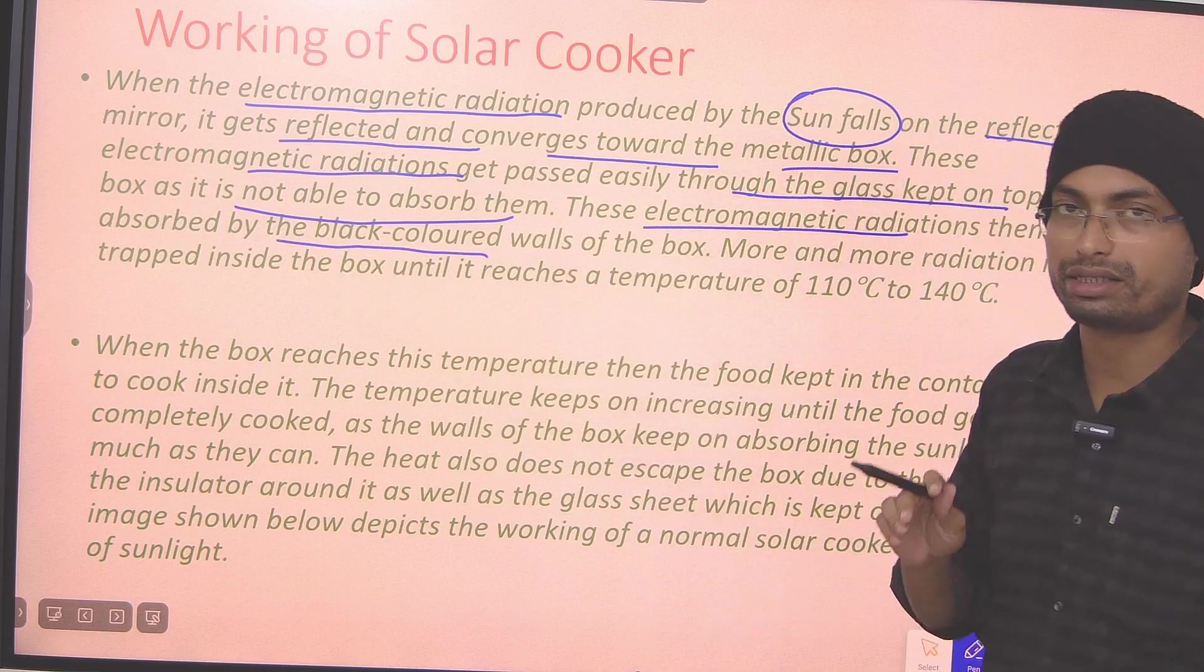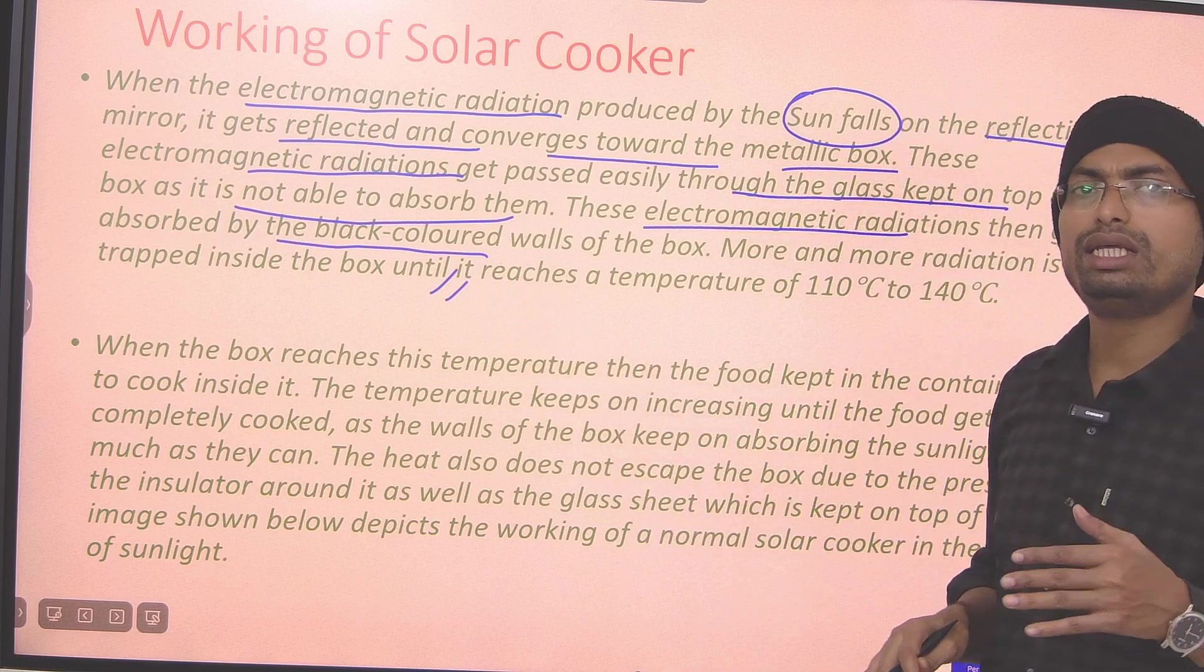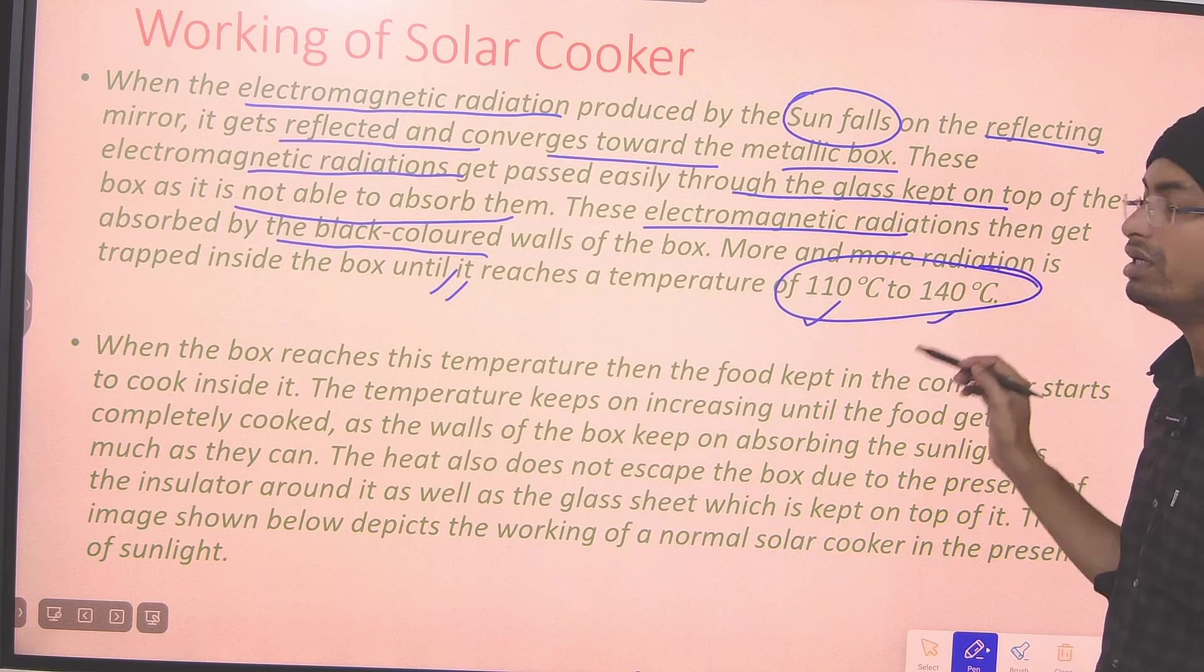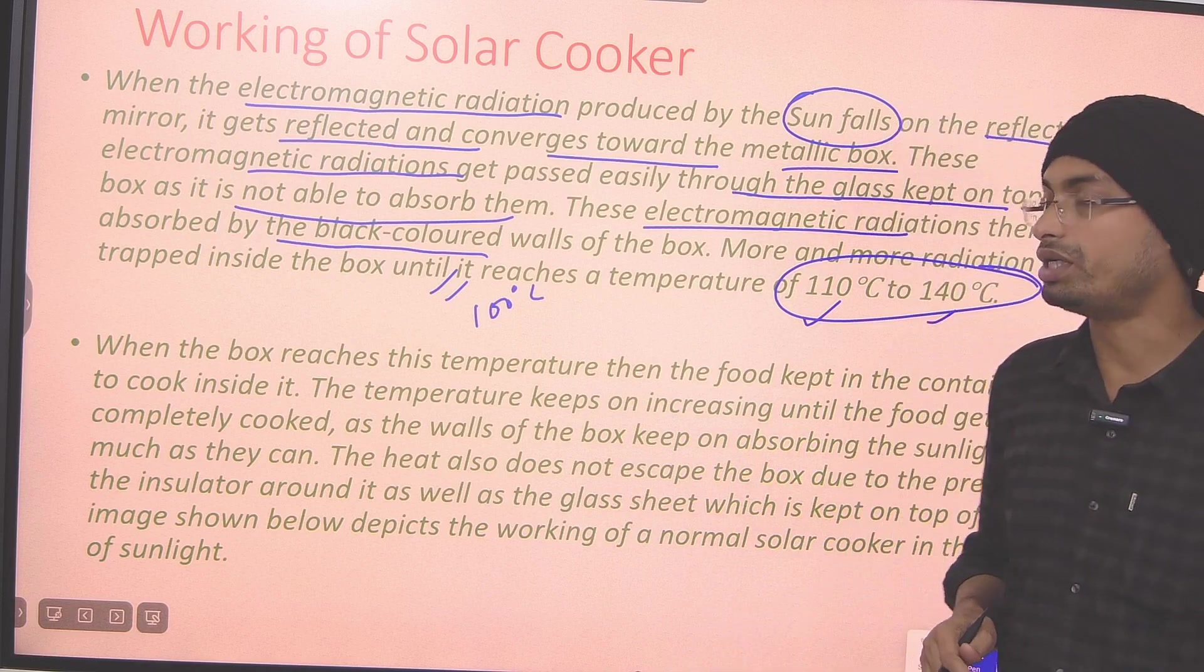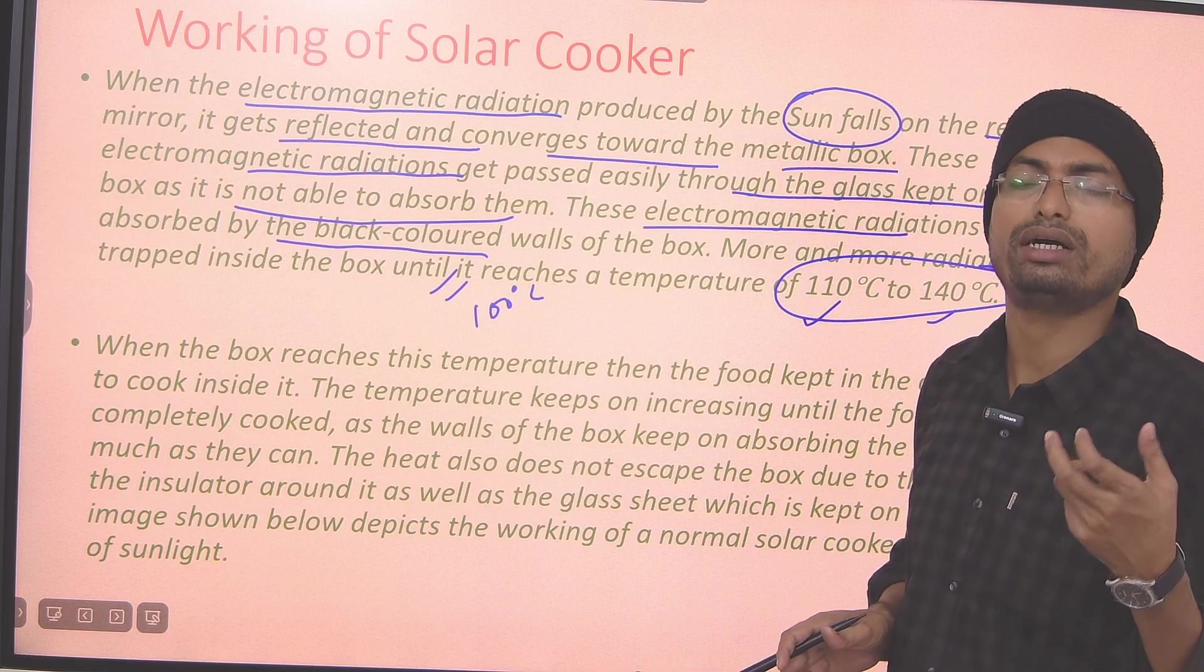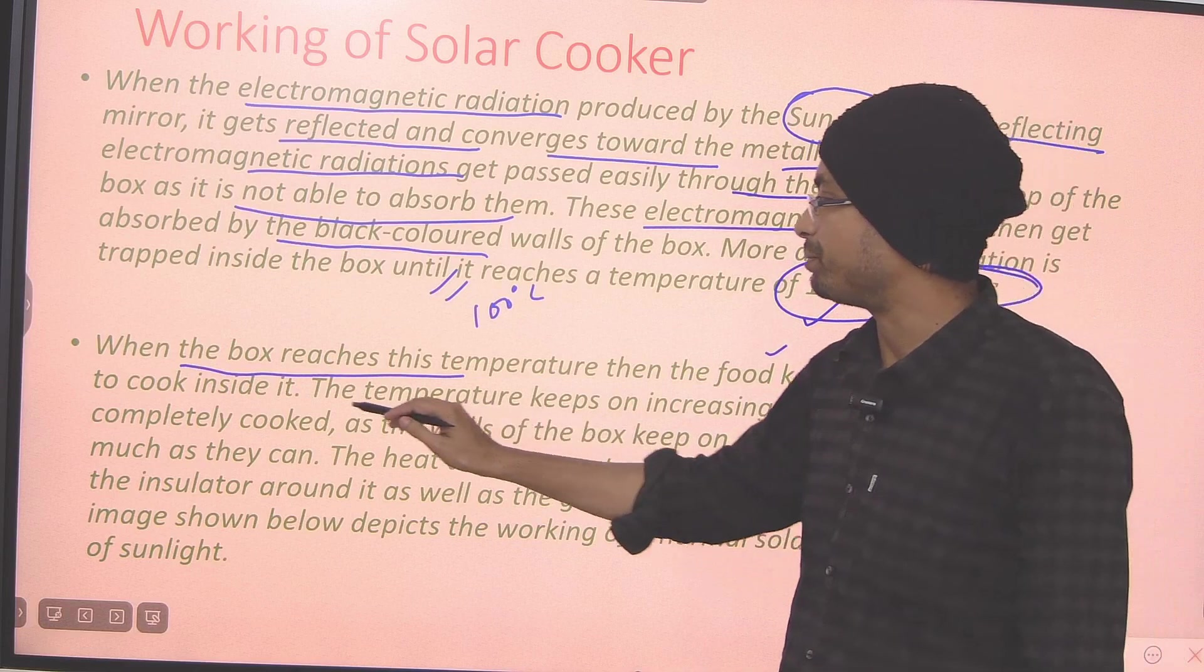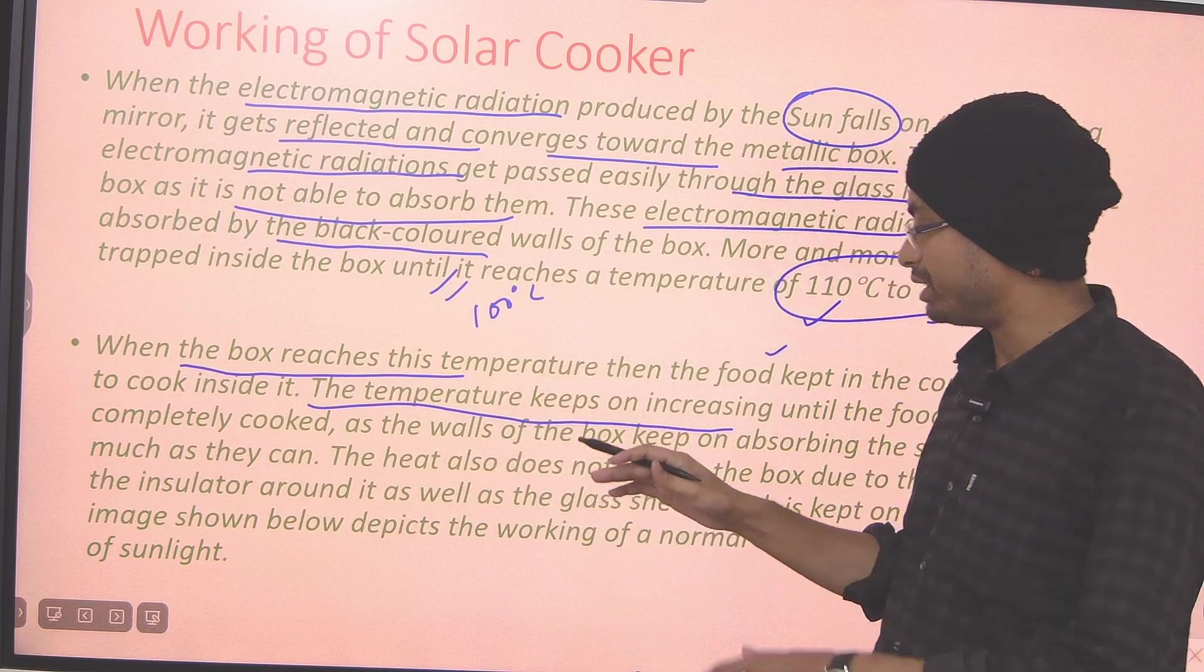The box interior has black color and it starts to absorb it. The temperature rises. Generally, the wooden or rectangular solar cooker reaches a temperature from 110 to 140 degrees Celsius. We know that 100 degrees Celsius is the boiling point of water. Now, when the temperature reaches this level in the box, the temperature keeps increasing, and the food gets completely cooked.